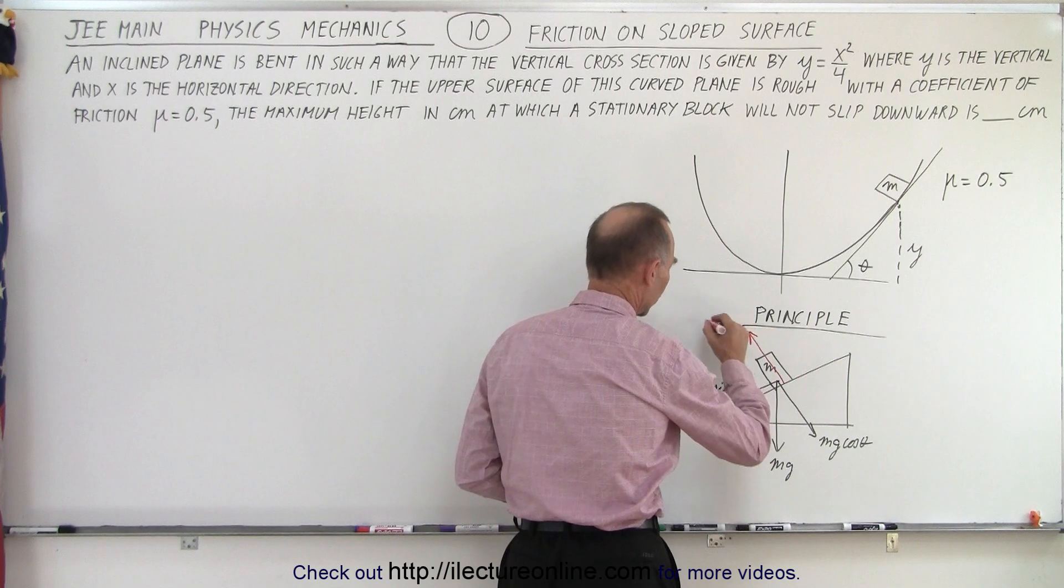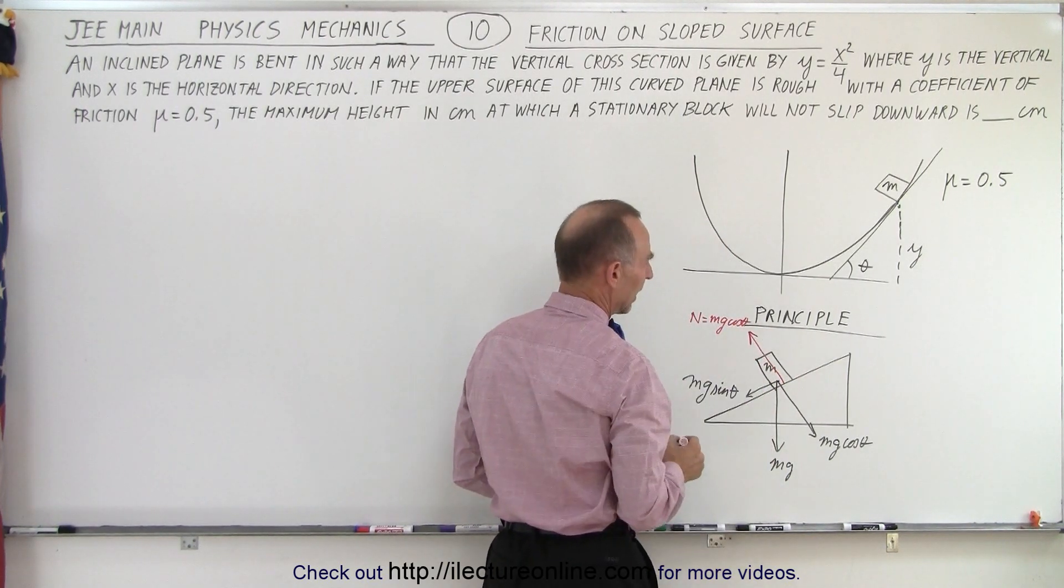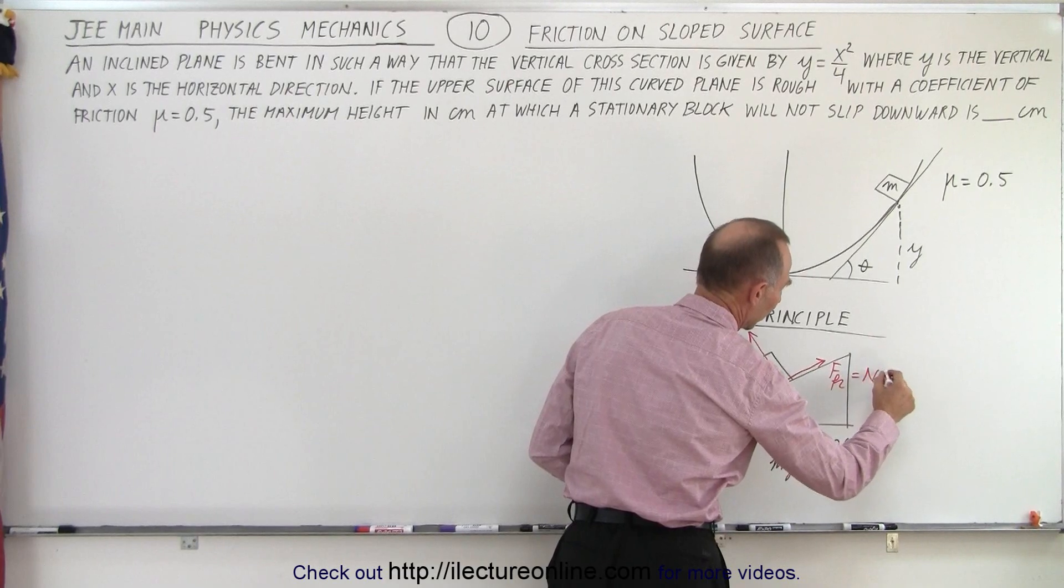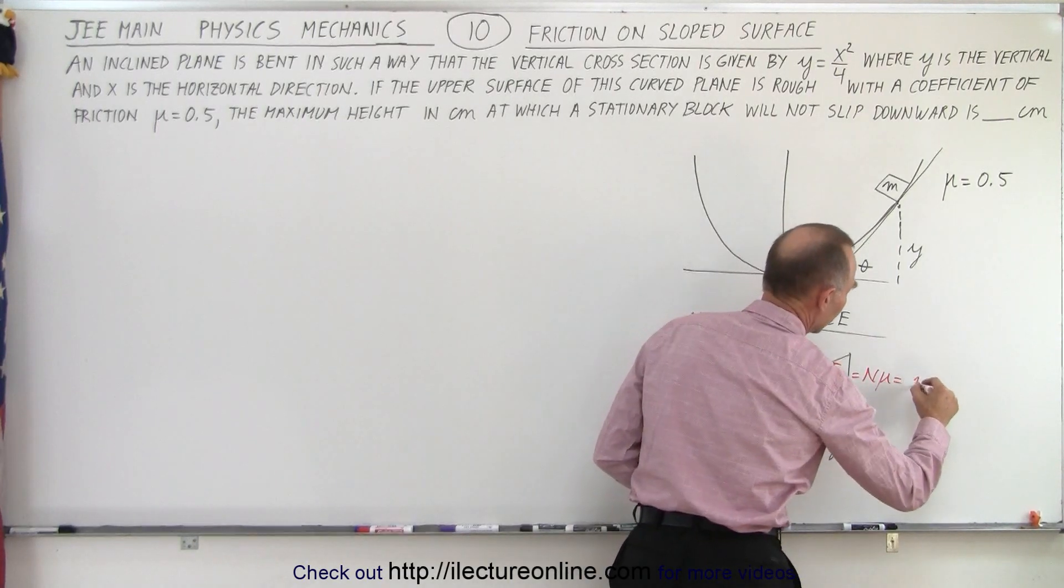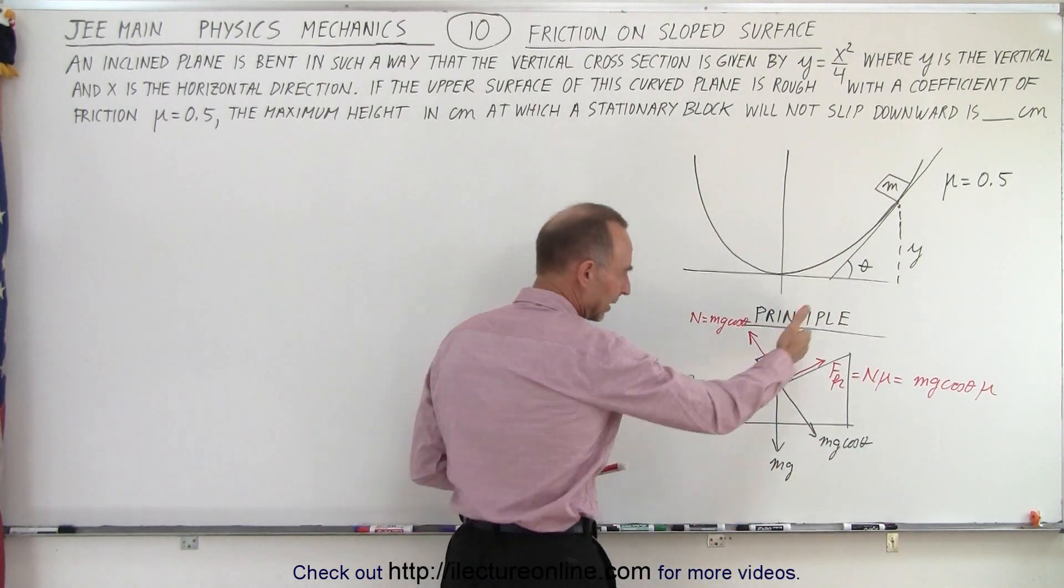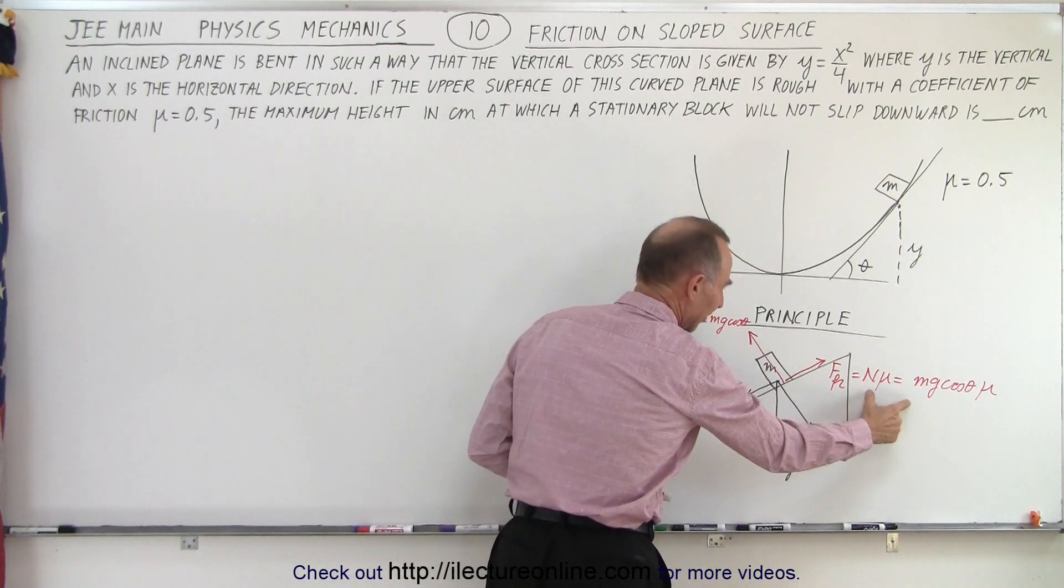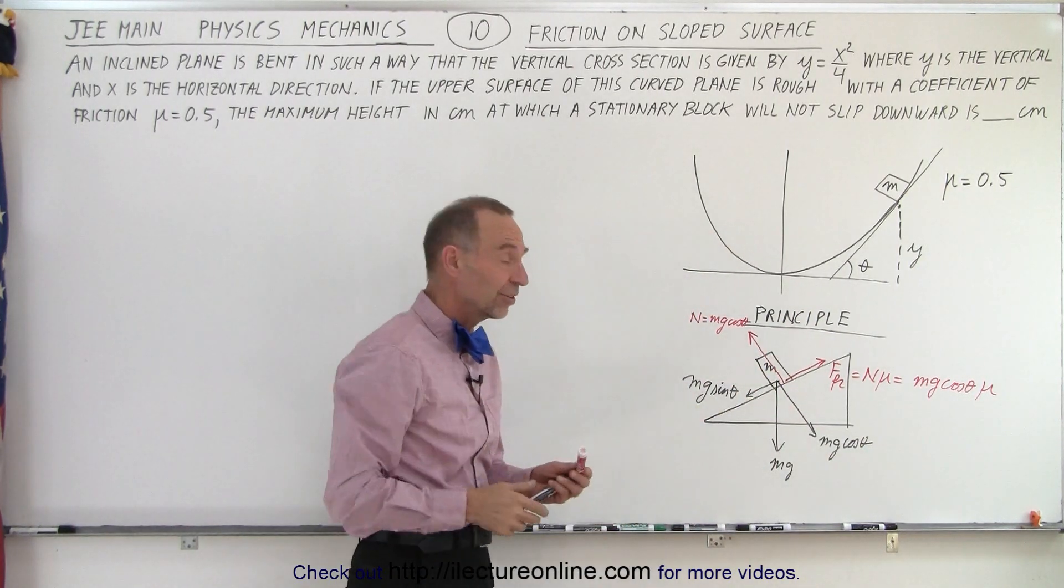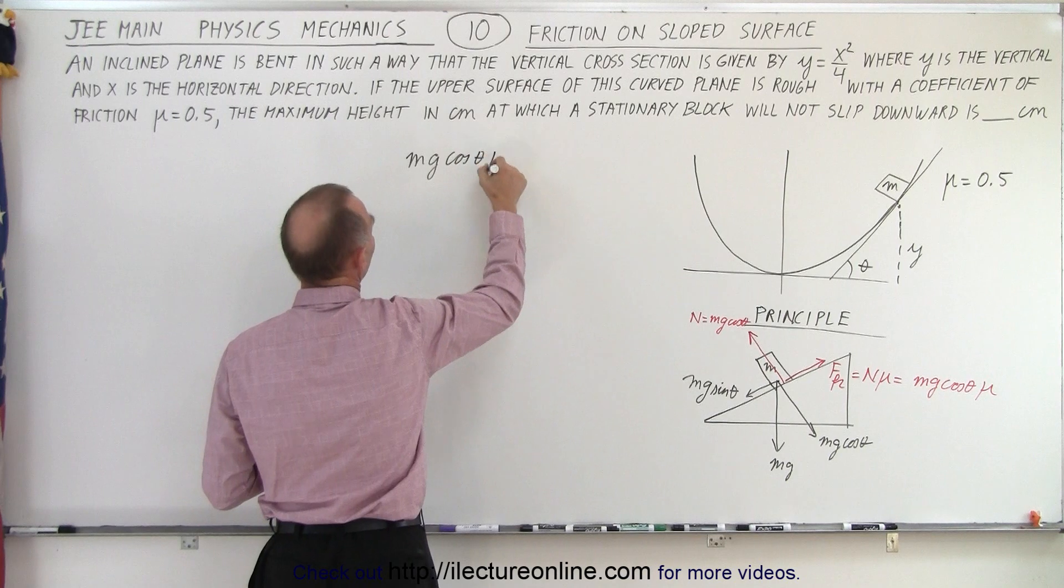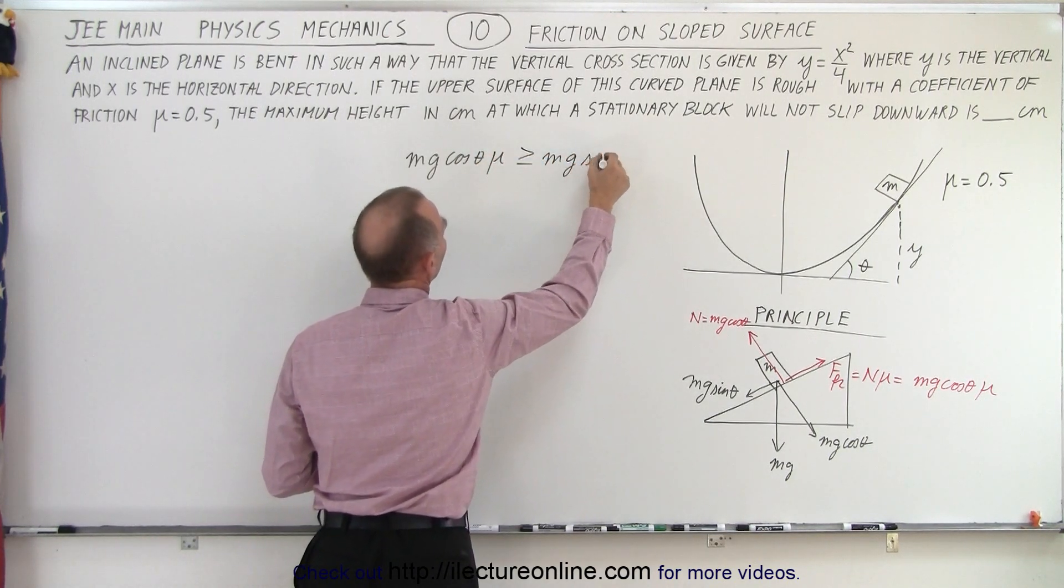Then of course we have the normal force pushing back this way, and the normal force would be equal to mg cosine theta. Then we have the friction force which keeps the block from sliding. The friction force is equal to the normal force times mu, which is equal to mg cos theta times mu. Then of course, looking at the incline, the thing that would keep the block from sliding down is that the friction force is at least as big as the mg sine theta. So the principle says that the mg cosine theta times mu must be bigger than or equal to the mg sine theta.